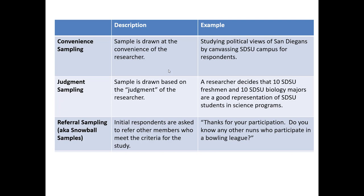Referral sampling, sometimes called snowball sampling, is when the initial respondents to a survey are explicitly asked if there are any other members they know who also would qualify for the study, and then we continue to recruit into our sample based on those referrals.